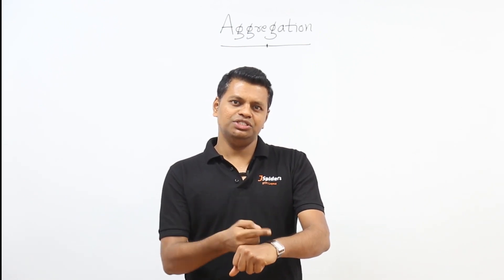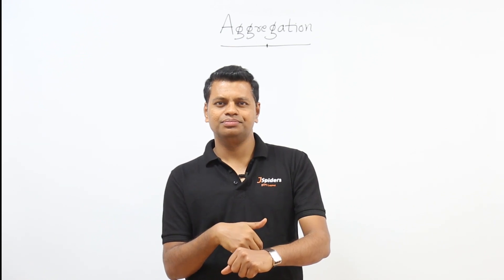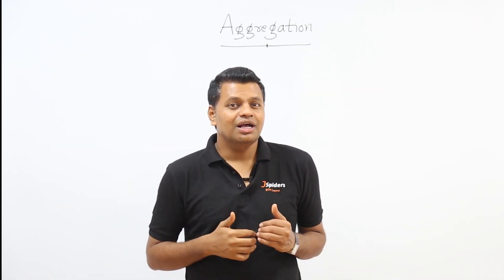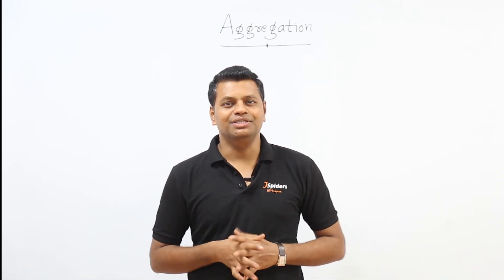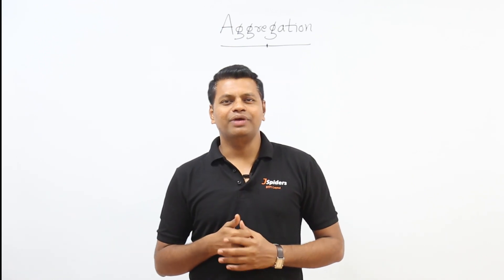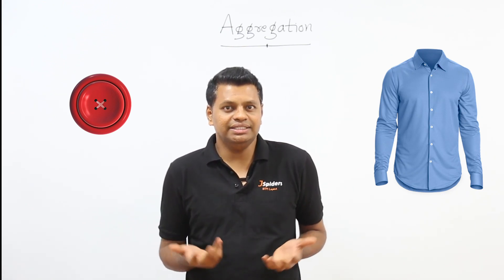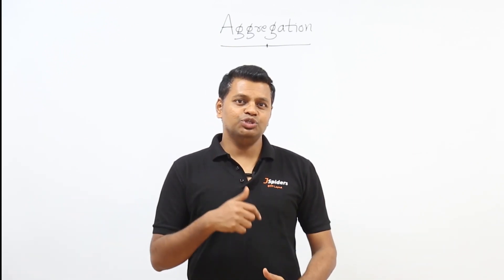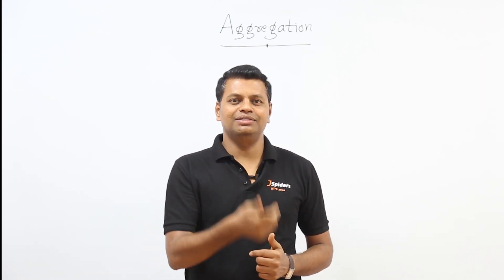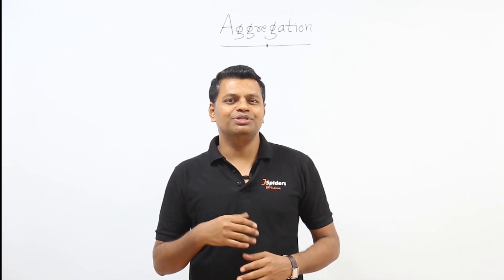Another example: this watch object is associated with me. If anything happens to me, it won't affect my watch. Similarly, if something happens to the watch, I'll just buy another one. The relationship between the watch and me is aggregation. Similarly, a button object associated with a shirt object — if something happens to the shirt, the button can still exist independently, and vice versa. This relationship is also called aggregation.